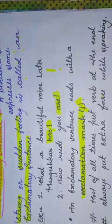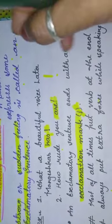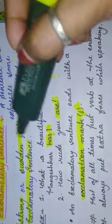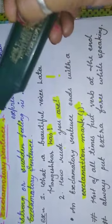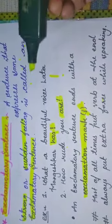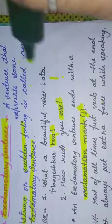So while writing exclamatory sentences, we should take care that we must use exclamation marks. And most of the time, as per the requirement of sentence, we put the auxiliary verb at the end of the exclamatory sentence.